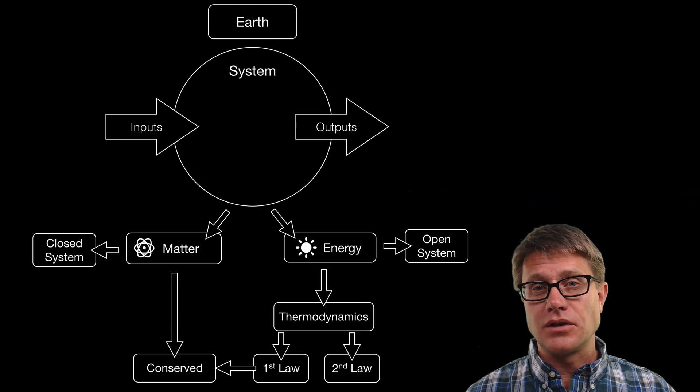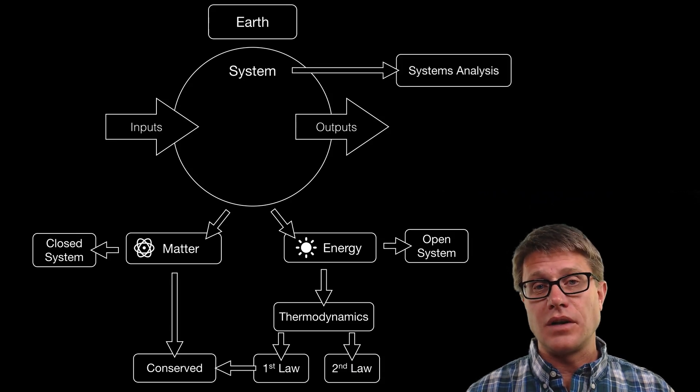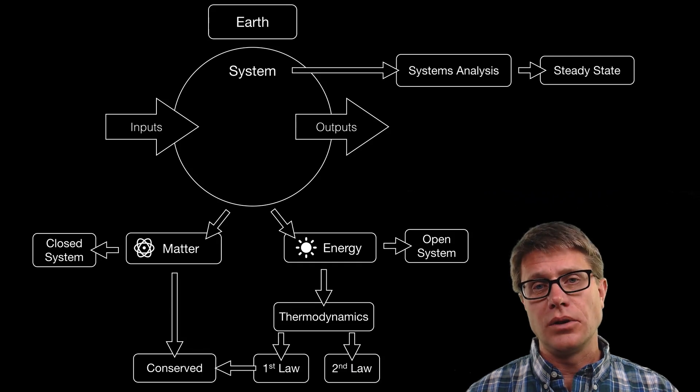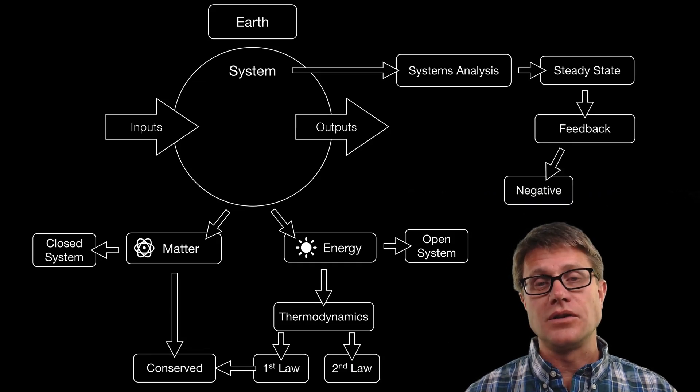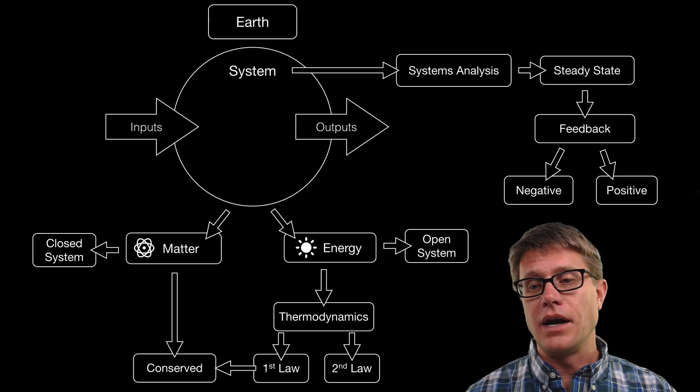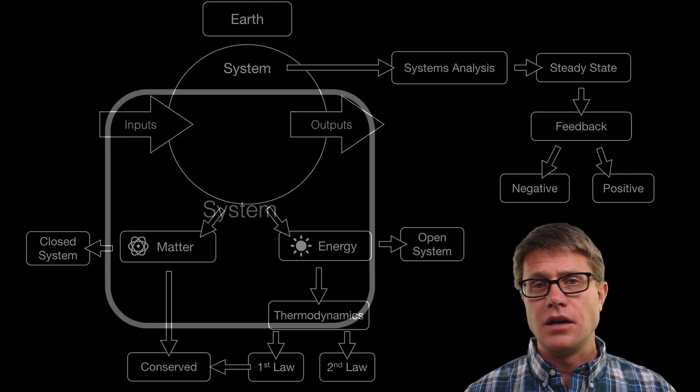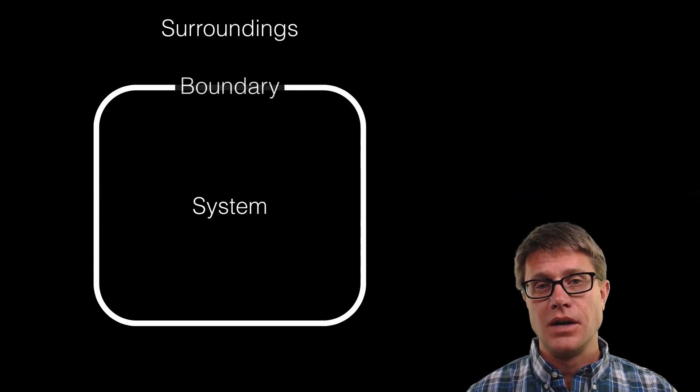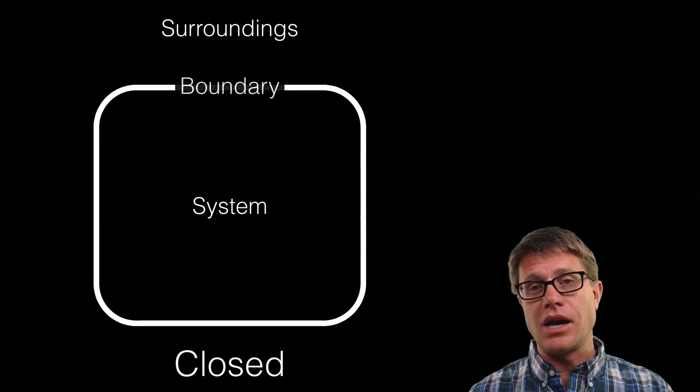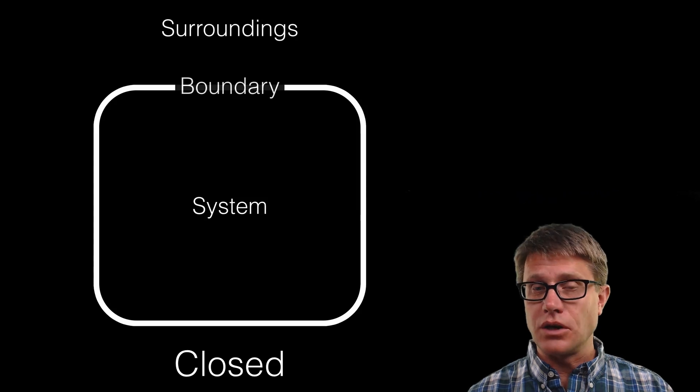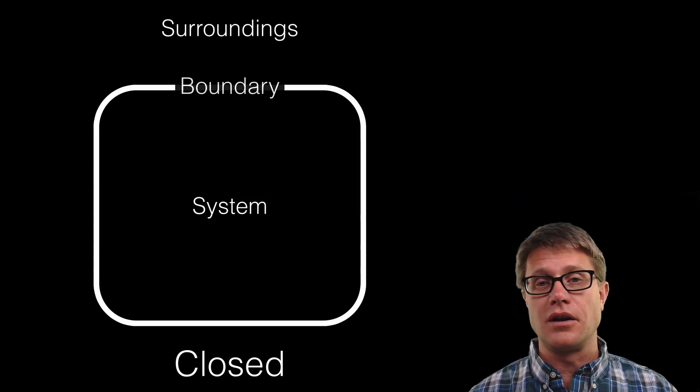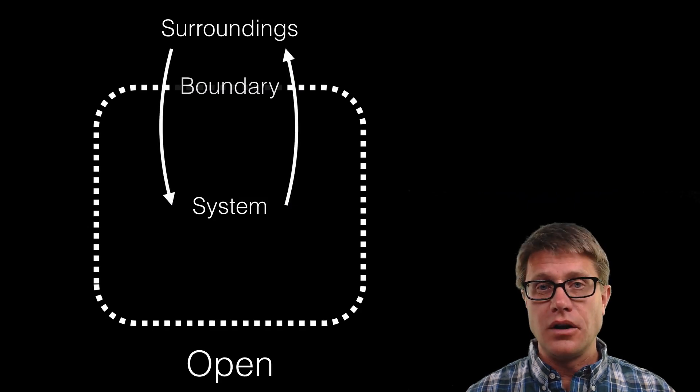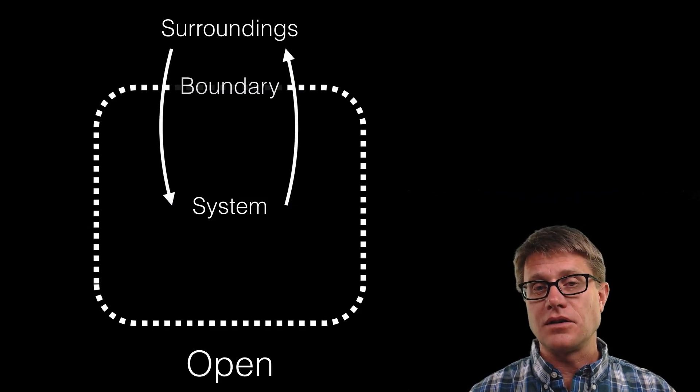Understanding how a system works is done through systems analysis. If it does not change we say that system is at steady state or at equilibrium. We can move it towards steady state using a negative feedback loop or away using a positive feedback loop. A system is simply separated from its surroundings using a boundary. Matter on our planet is a closed system. We do not get new matter. If we look at an open system like energy then there is flow from the surroundings into the system and vice versa.